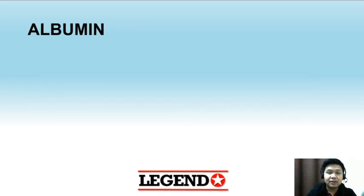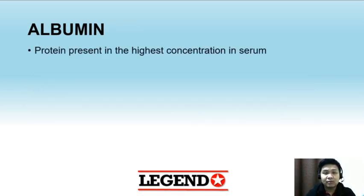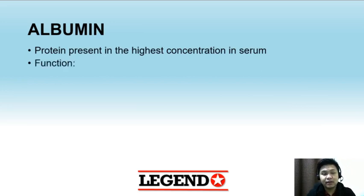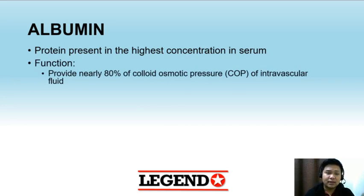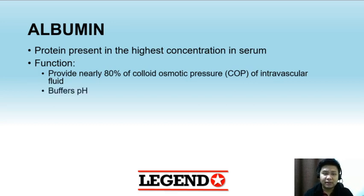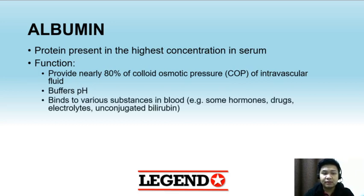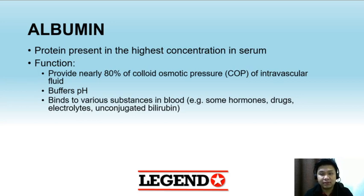The next protein is albumin. Albumin is the serum protein with the highest concentration in serum. It provides nearly 80% of colloid osmotic pressure — this is why in hypoalbuminemia, patients tend to develop edema. It also buffers pH and binds to various substances in blood such as hormones, drugs, electrolytes, and unconjugated bilirubin.